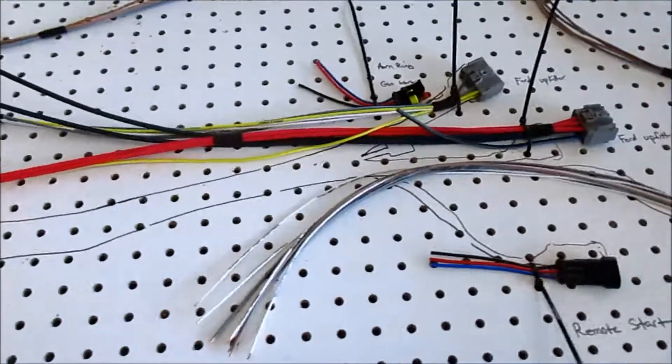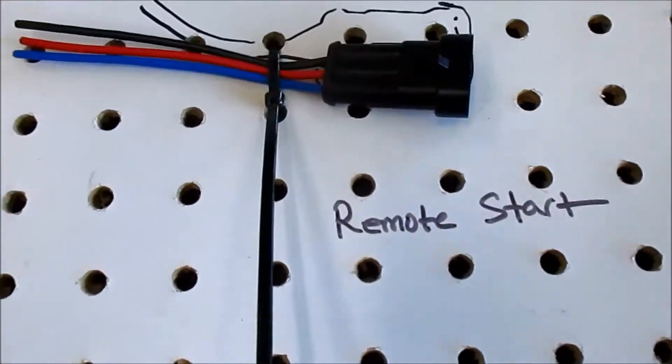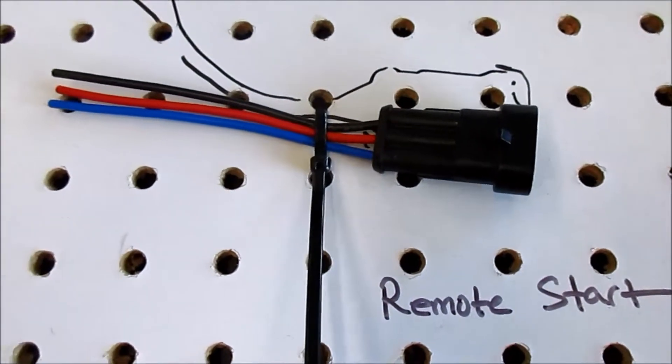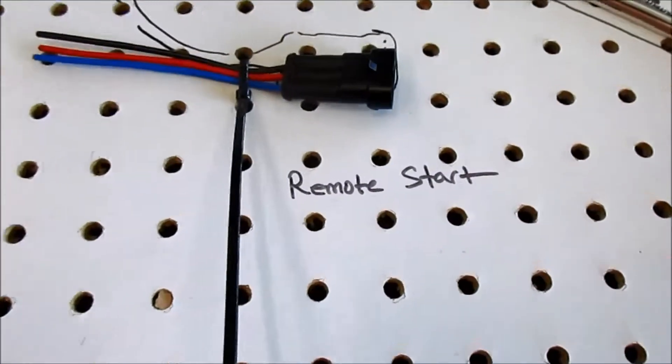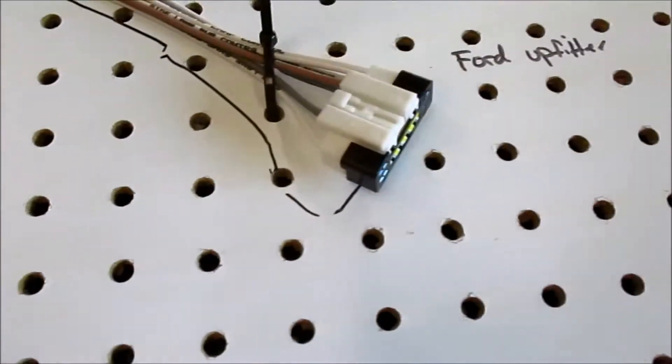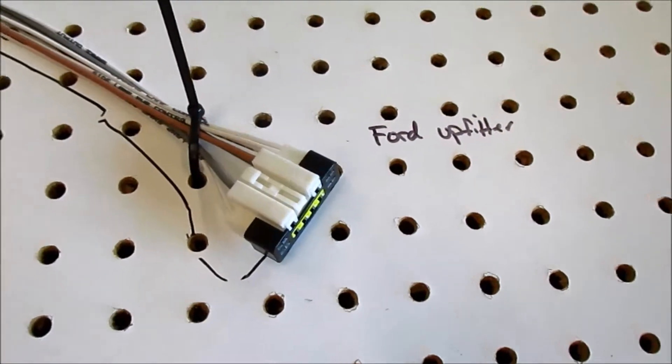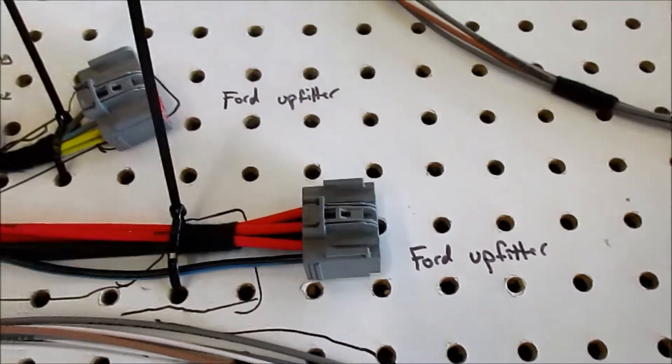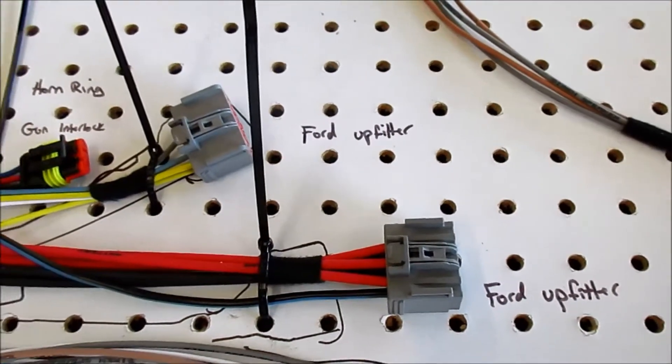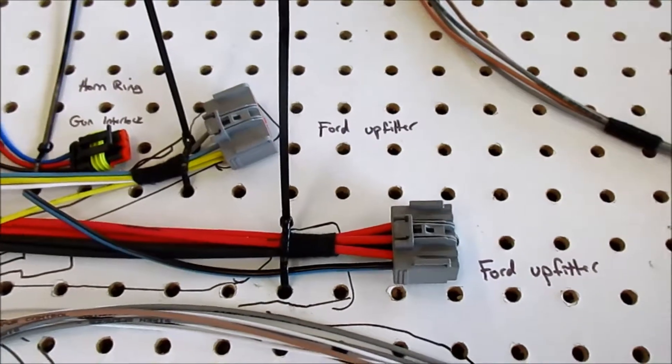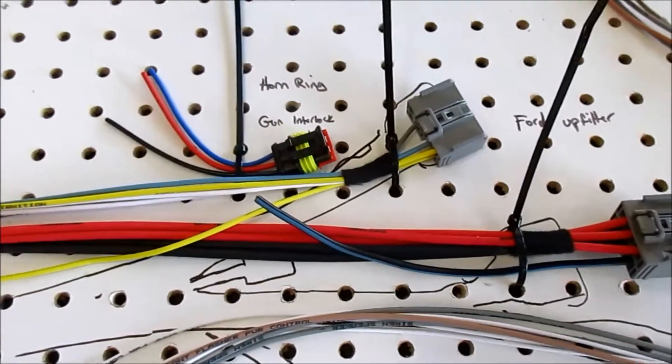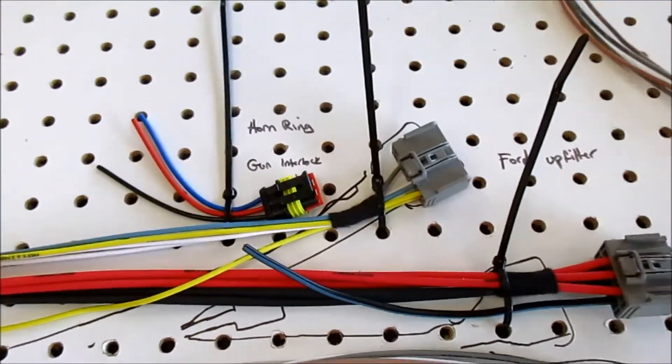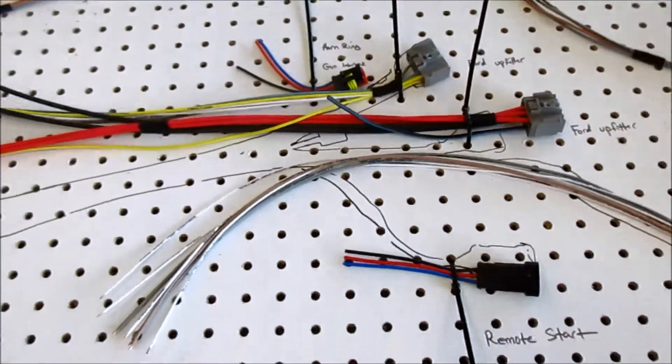You can see we have a couple of quick disconnects that we're adding. That one is for the remote start that we have on the vehicle. Then we have the Ford upfitter switches or connections, and this will allow us to pull in power just by simply plug and play versus going to the battery and having to go through the firewall. We have our horn ring gun interlock.